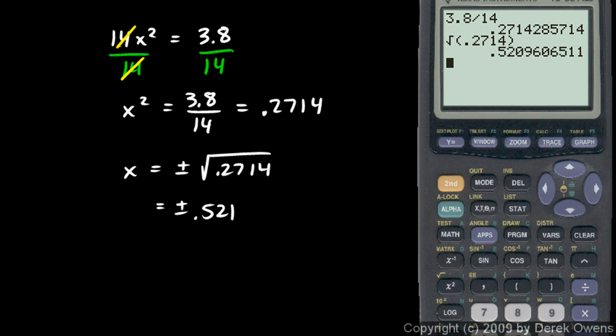I'll show you a little better way to do that on these calculators. We can go back to the 3.8 divided by 14. Instead of rounding that number, the calculator has stored that answer in its memory to as many decimal places as it can. So we rounded it to 0.2714, but if we want to take the square root of that, we can hit square root and then hit the second and the answer key.